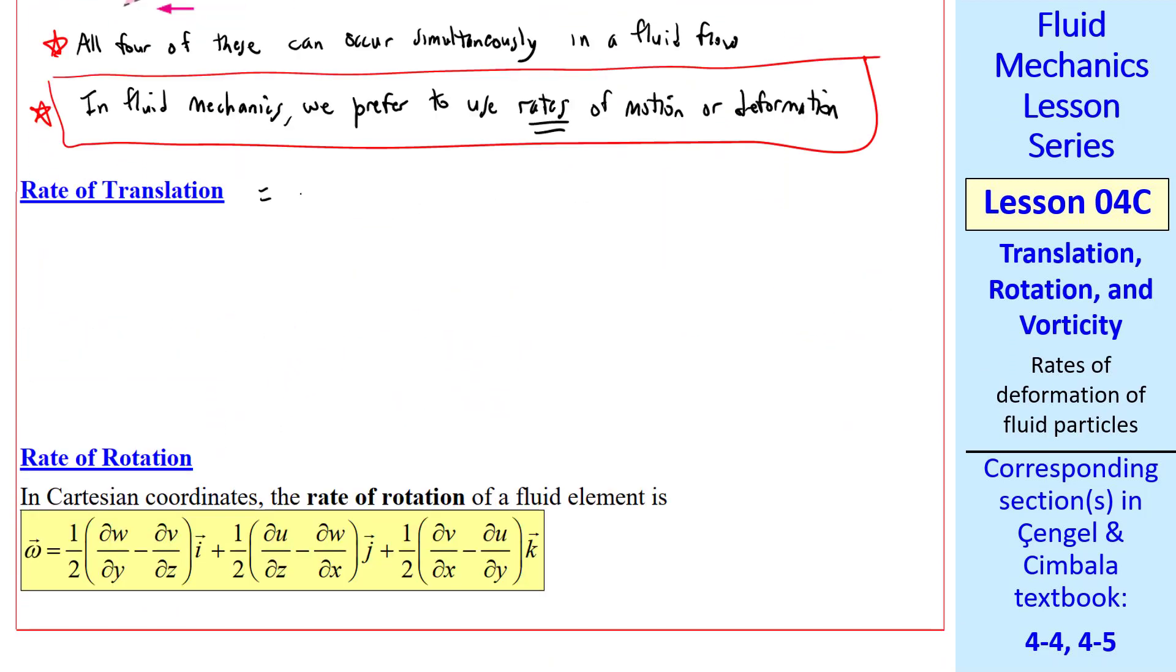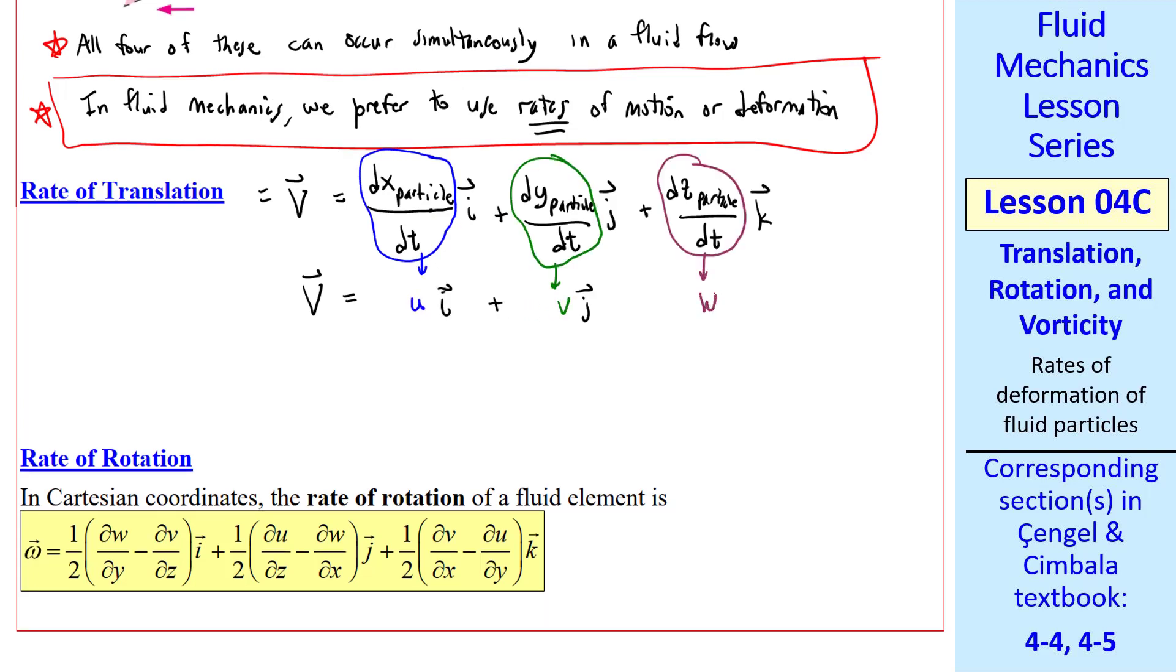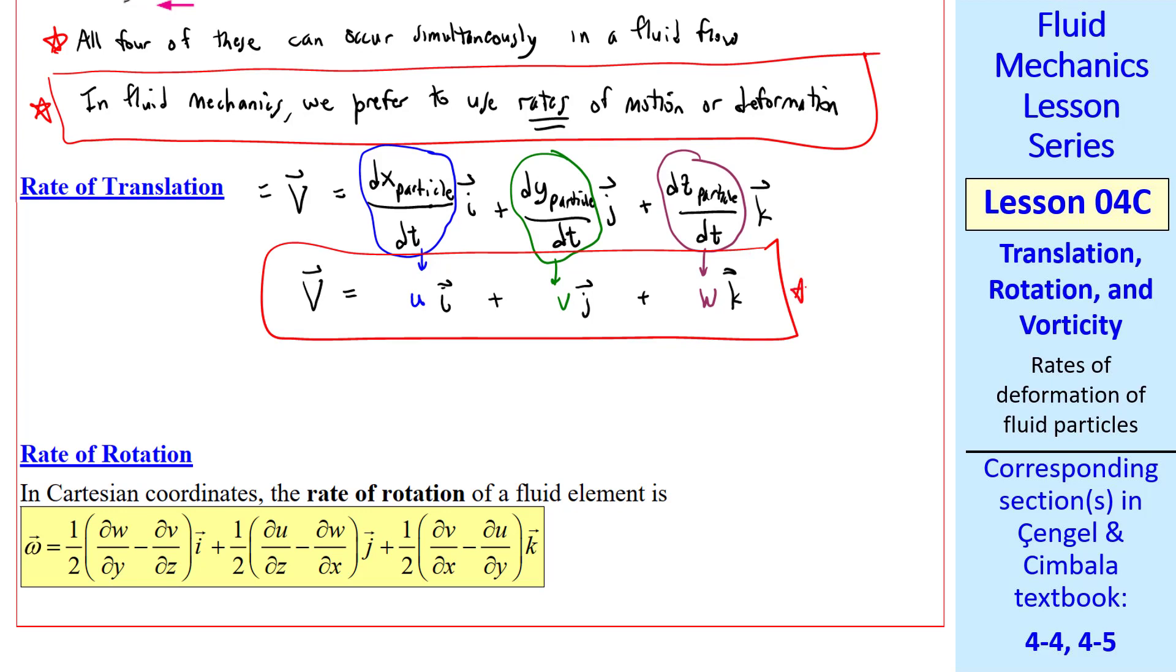Rate of translation. It should be pretty clear that the rate of translation is the velocity vector, how fast the particle is moving and in what direction. By the way, I use particle and element interchangeably. In Cartesian coordinates, we have dx particle dt i plus dy particle dt j plus dz particle dt k. Well, this is by definition u, this is by definition v, and this is by definition w, which is just the velocity vector, which is a field variable in a fluid flow.